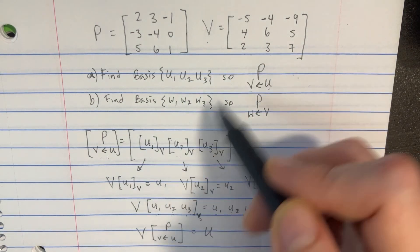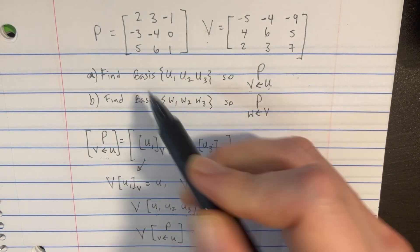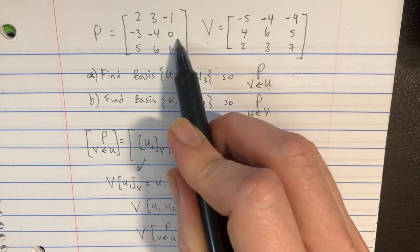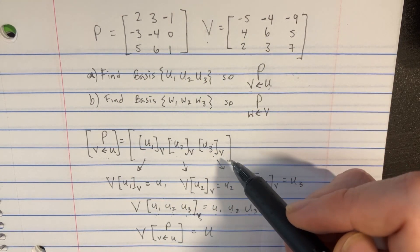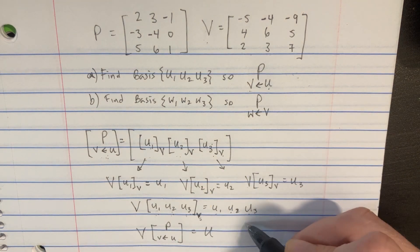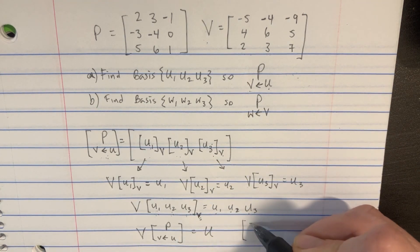Now it's nice of them to actually give us the whole V matrix, and the whole P matrix. So all we have to do is really multiply these two matrices together. Although you want to do that in the right order.